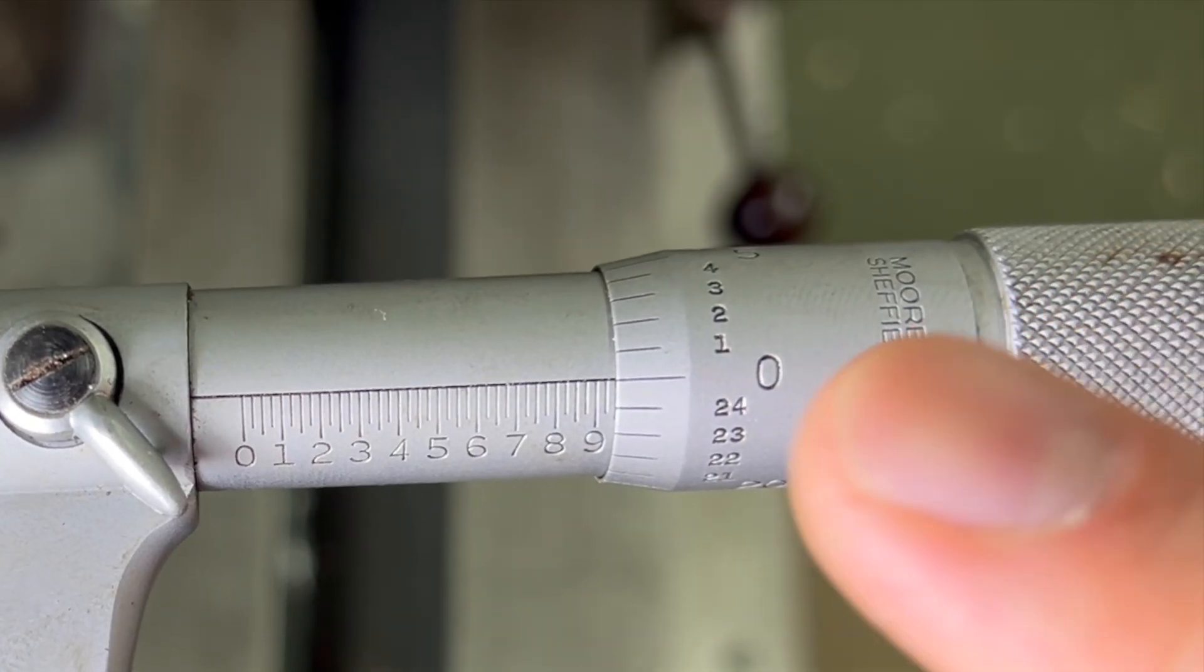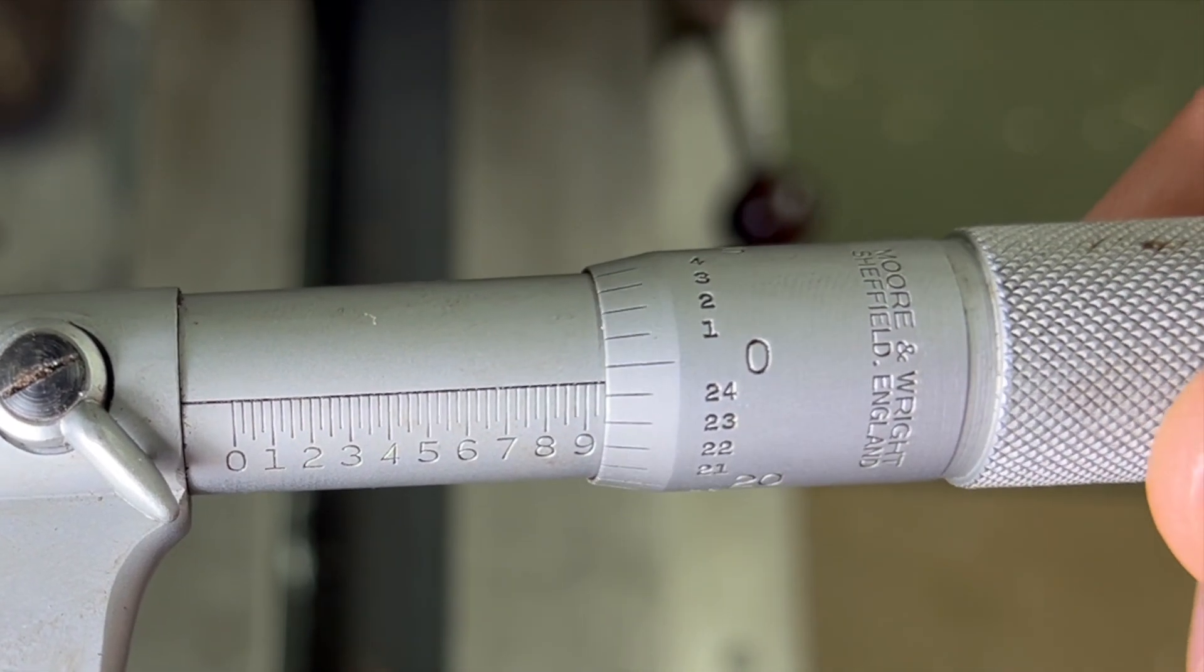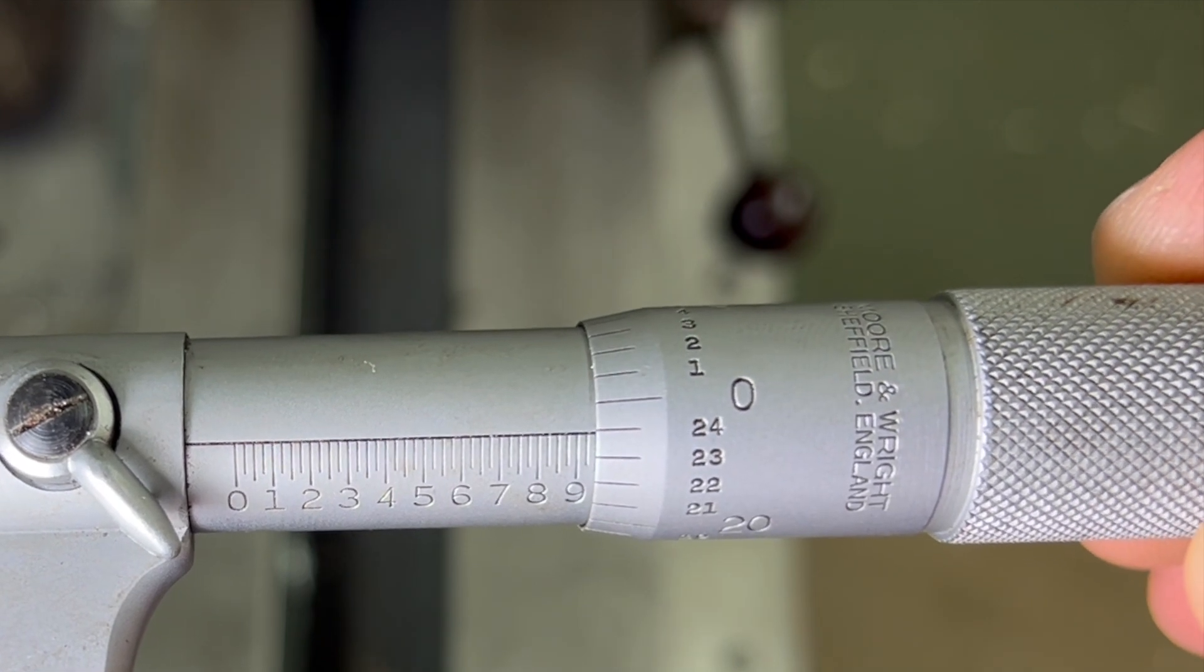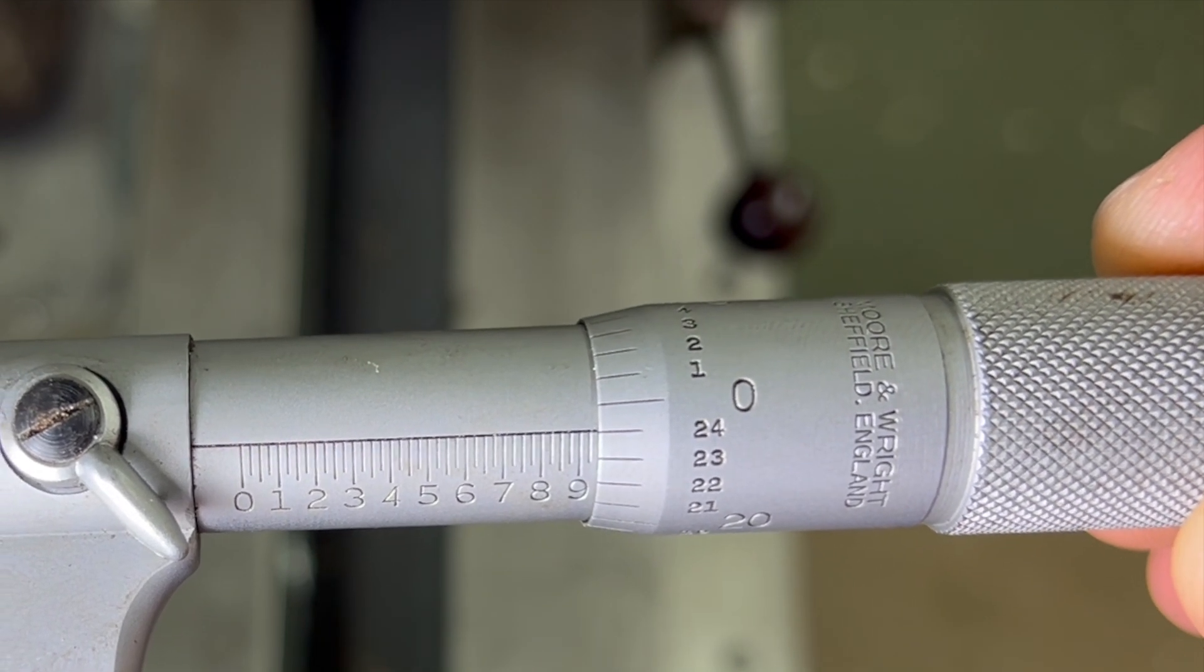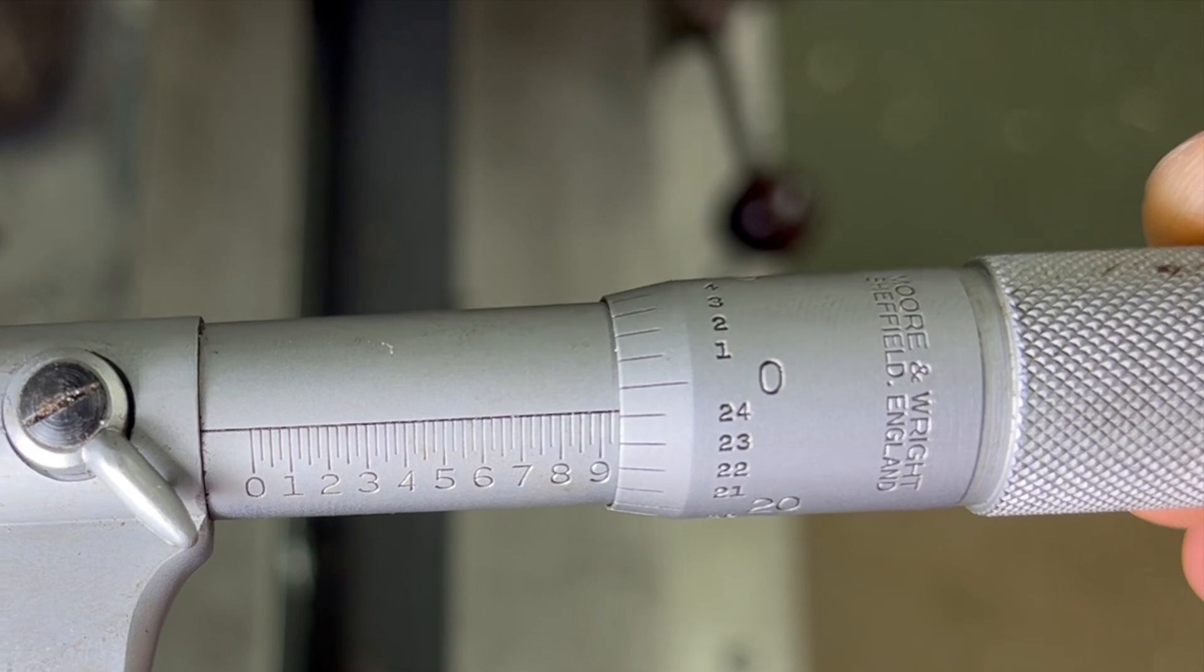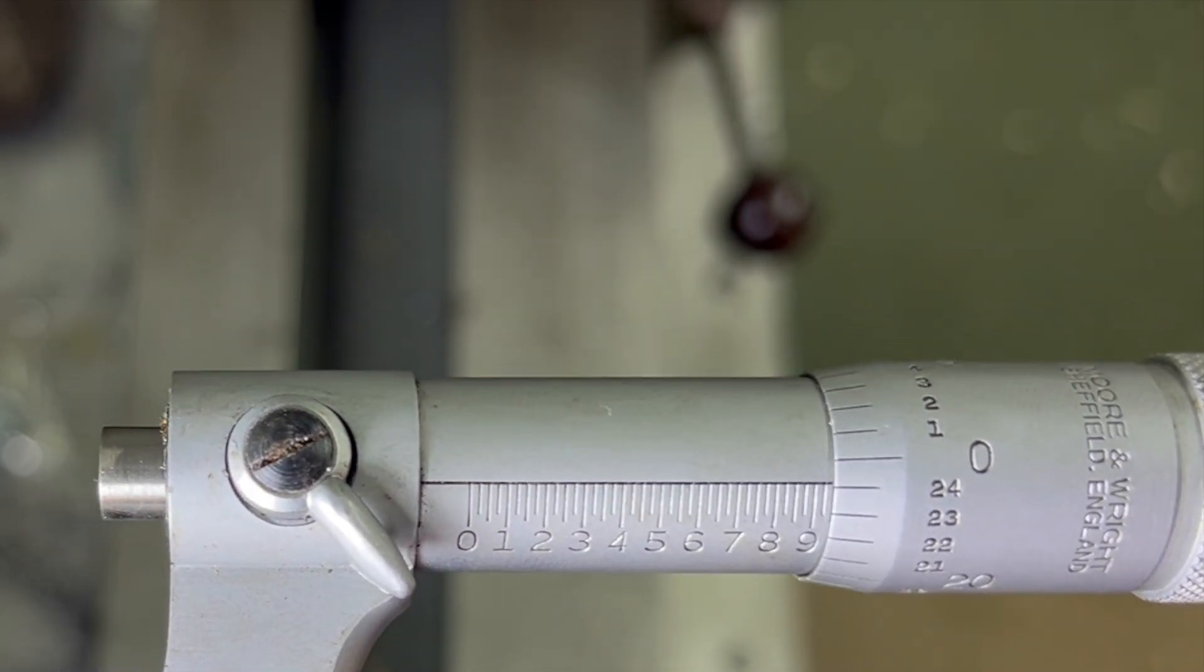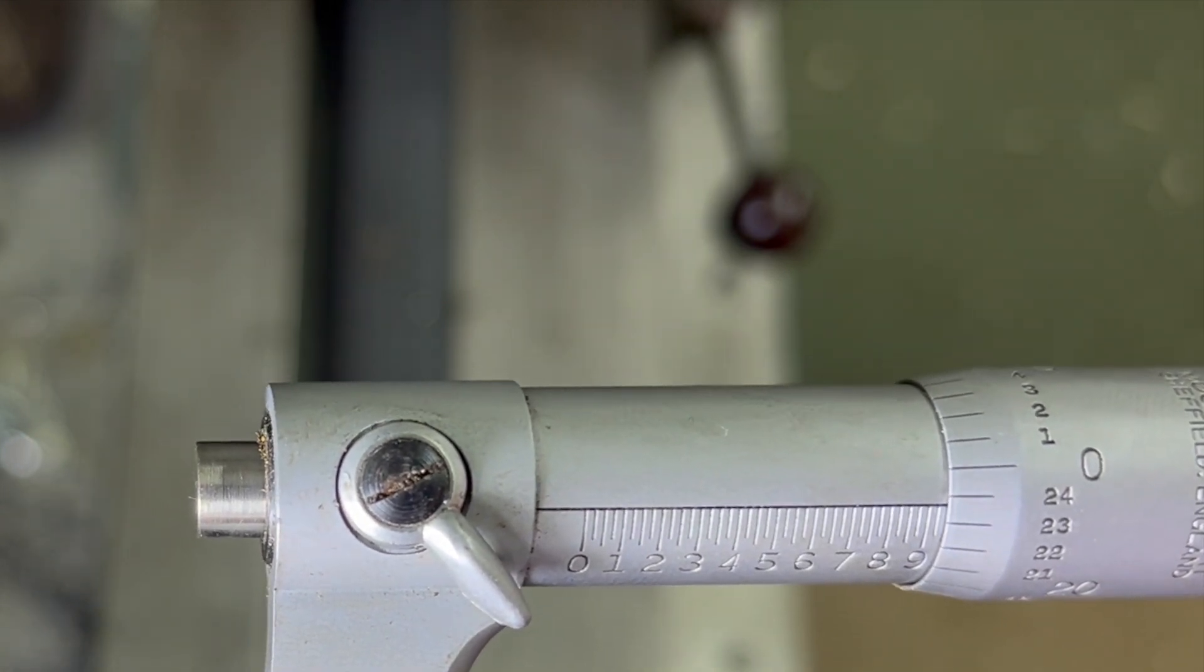Over here, marked from zero all the way around to twenty-five on the thimble, these are divisions of 0.001. So these are thousandths of an inch. Okay. So I'm going to demonstrate that now on a feeler gauge. And the feeler gauge is going to be 0.04.